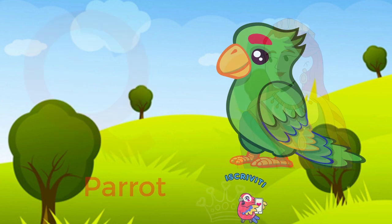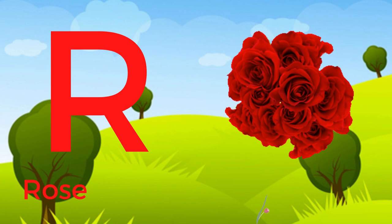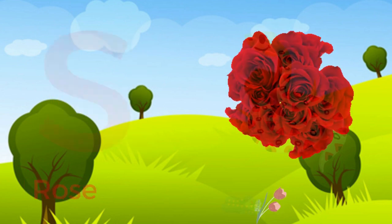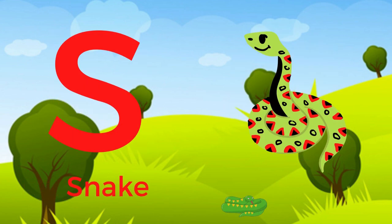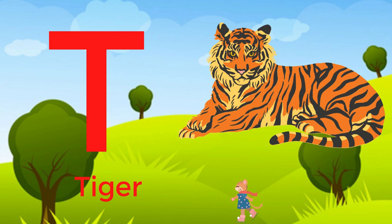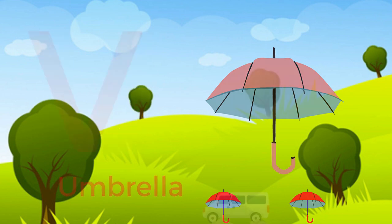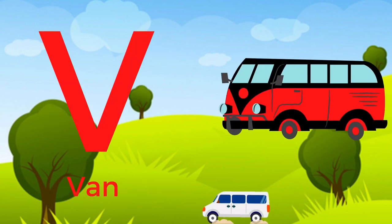Q for Queen. R for Rose. S for Snake. T for Tiger. U for Umbrella. V for Van.